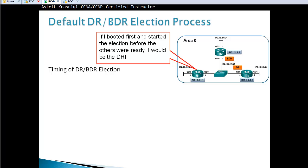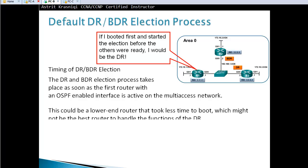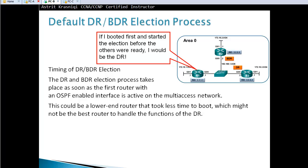Regarding timing of DR and BDR election: if a router boots first and starts the election before the others are ready, it will become the DR — even if it has a low priority. The problem is that OSPF is non-preemptive; once the election is done, that's it until the DR fails. The election takes place as soon as the first router with an OSPF-enabled interface is active on a multi-access network, which could be a lower-end router that booted faster.